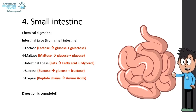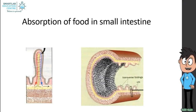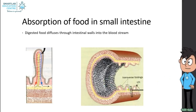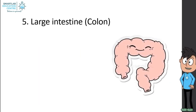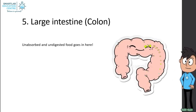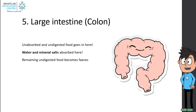Digestion is now complete. After food is digested, it must be absorbed, and absorption starts in the small intestine. Digested food diffuses through the intestinal walls into the bloodstream and is transported by blood. The large intestine, also known as the colon, receives unabsorbed and undigested food. Water and mineral salts are absorbed here, and the remaining undigested food becomes feces.